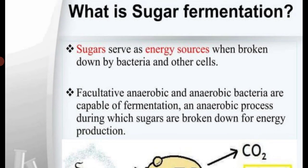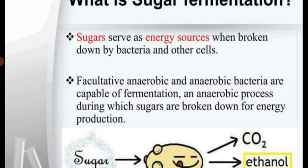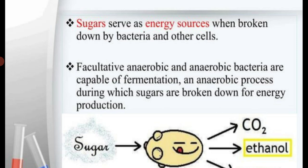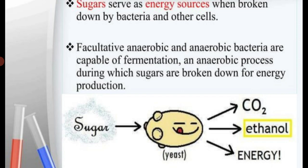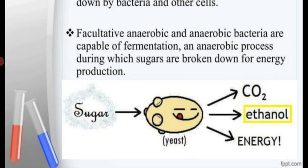What is sugar fermentation? Sugars serve as energy sources when they are broken down by bacteria and other cells like yeast. Facultative aerobic and anaerobic bacteria are capable of fermentation — an anaerobic process during which sugars are broken down for energy production. In aerobic catabolism, the final electron acceptor is an inorganic molecule. Both aerobic and anaerobic catabolism may lead to energy generation. Through the action of yeast, sugars get converted into carbon dioxide, ethanol, and energy — this is also an example of fermentation.